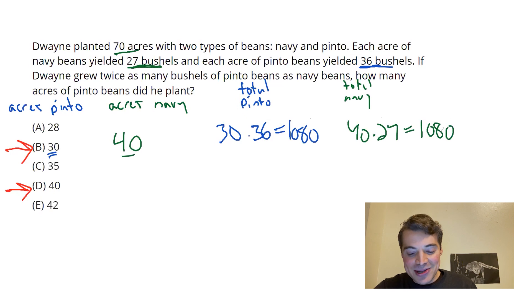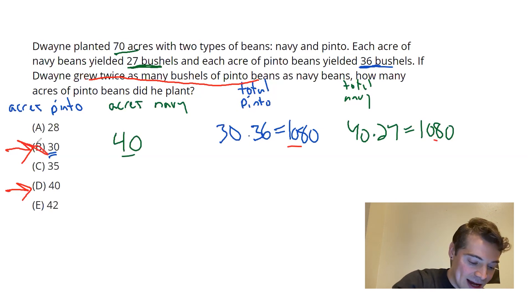So what do I do with those two numbers? Well, remember, our goal here, we want twice as many pinto as navy. Our pinto amount should be double the navy amount. Here, those two are actually equal. So I know it can't be B. I didn't achieve my goal there.